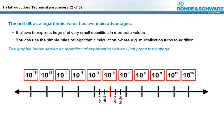We have just heard about the possibility of the unit dB allowing us to express huge and very small quantities in moderate values. This is quite important for all kinds of diagrams and displays of measurement instruments. And there is another big advantage.